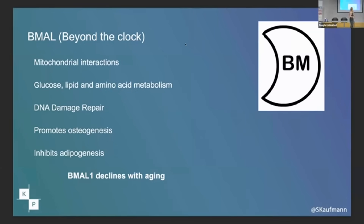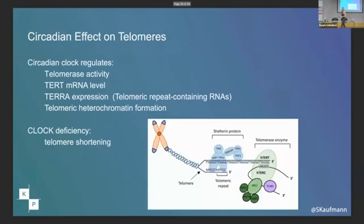The second category here is telomeres. It turns out that all the enzymes involved in telomere biology are oscillatory — they're all on the circadian cycle: telomerase, TERT, TERRA. So if you're not sleeping, you're not making all of these proteins, and you're not making the stuff that's keeping your telomeres healthy. We know, at least in rodent models, that if you have a clock deficiency, your telomeres are getting shorter than they should be.